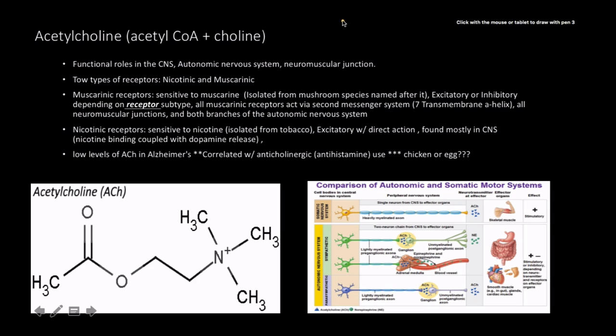Acetylcholine is made from acetyl-CoA plus a choline group. It has many functional roles in the central nervous system, the autonomic nervous system, and the neuromuscular junction. Because it is located in so many places, we've been able to really study its structure and kinetics. We know more about acetylcholine than any other neurotransmitter.